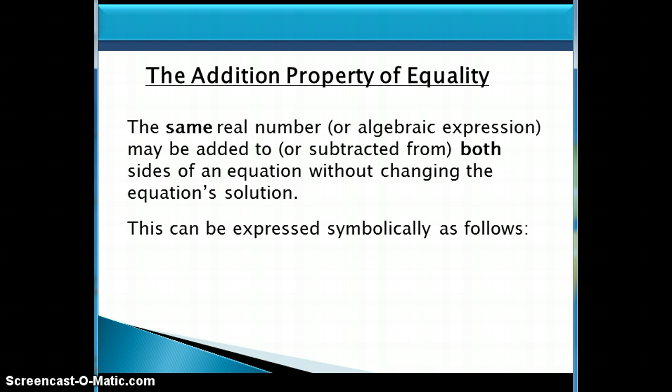This can be expressed symbolically as follows. If a is equal to b, then if I add c to both sides, this will also be true. In other words, a plus c will be equal to b plus c. And if I subtracted c from both sides, this would also be true. So a minus c would be equal to b minus c.